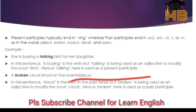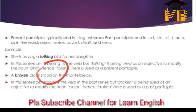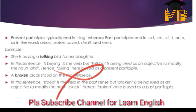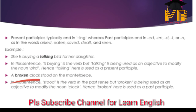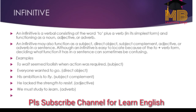Here you have: 'A broken clock stood on the mantelpiece.' Here, 'stood' is the verb, but 'broken' is not being used as a verb — it is being used as an adjective which modifies the clock. How is the clock? It is a broken clock. So 'broken' is being used as a past participle.